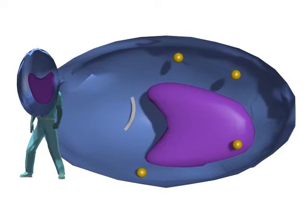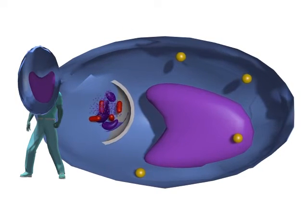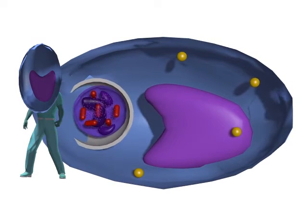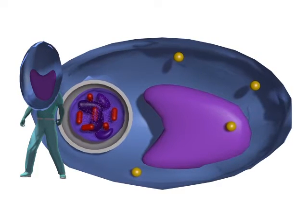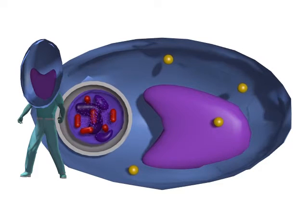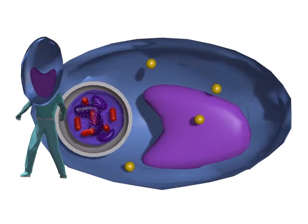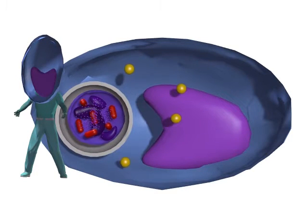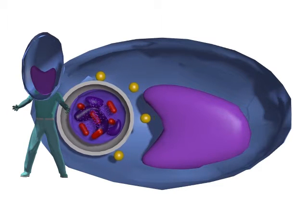I can ingest things which have bound to antibodies and other opsonins. I can also ingest neutrophils which are full of microbes, and thus I can clean up after other aspects of the immune response.